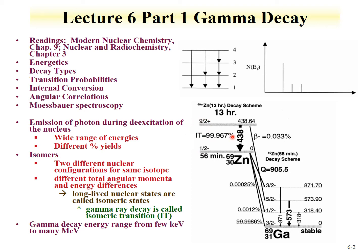The spin and parity of the ground state and the isomeric state are different, and they have different energies — one being the ground state. This excited metastable zinc-69M has a spin and parity of 9.5 plus, while the ground state is 1.5 minus. The large spin difference and parity flip make it highly forbidden, just like in beta decay.